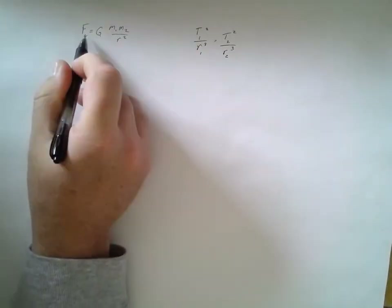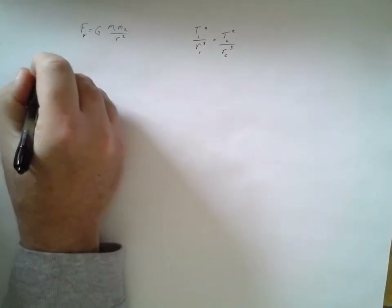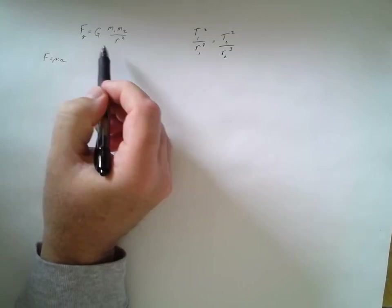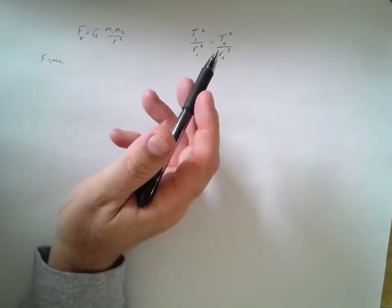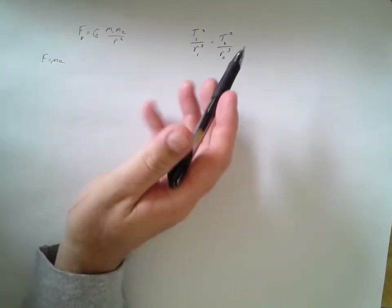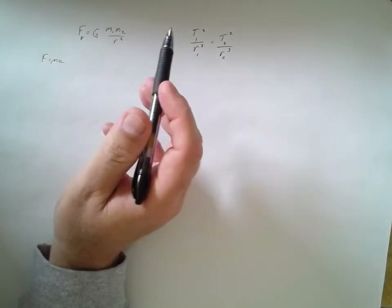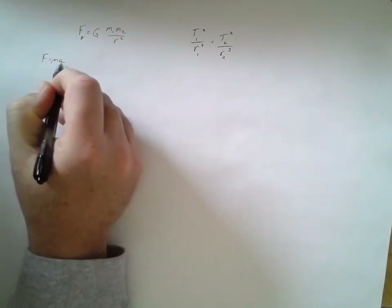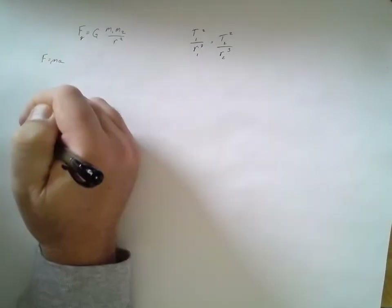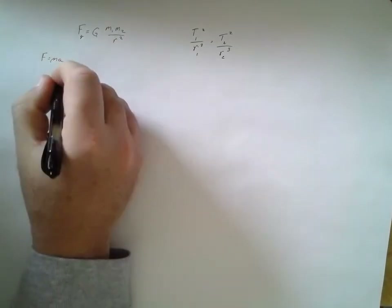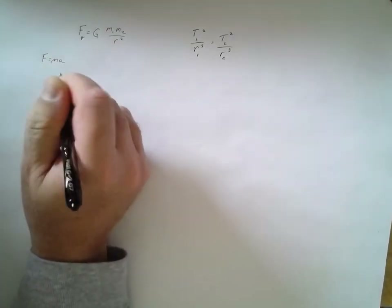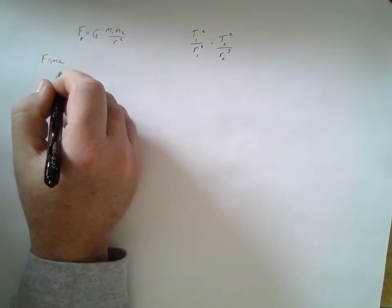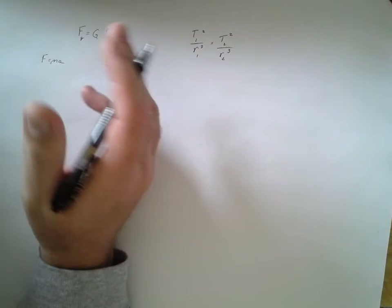We're going to look at force — remember F equals ma. The acceleration here comes from the path a planet follows. According to Kepler's First Law, planets follow an ellipse, and a circle is a perfect ellipse. So instead of gravity pulling straight down, we're going to look at motion in a circular path.